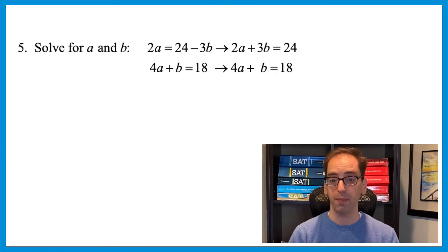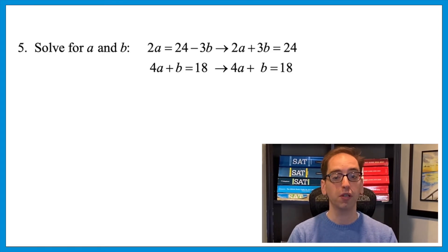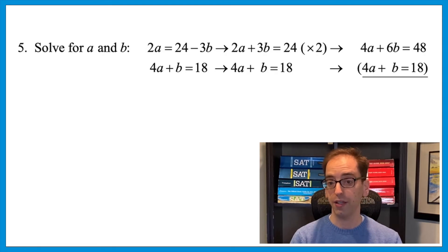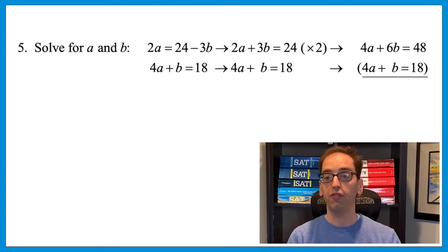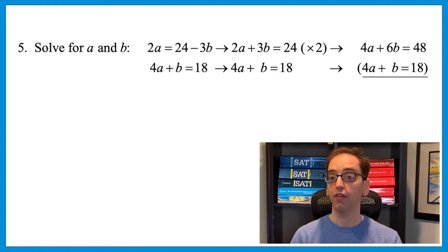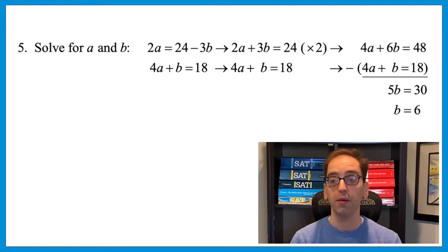The next step is to make one variable disappear by getting coefficients to match. We have 2a on top and 4a on the bottom, so multiply the first equation by 2: that gives 4a plus 6b equals 48. With 4a plus b equals 18 underneath, both a terms have the same coefficient. Subtracting down each column: 4a minus 4a cancels out, 6b minus b gives 5b, and 48 minus 18 gives 30. So 5b equals 30, meaning b equals 6.